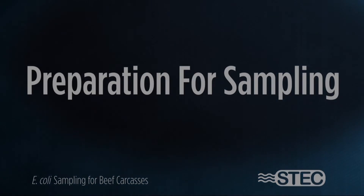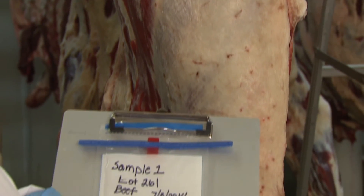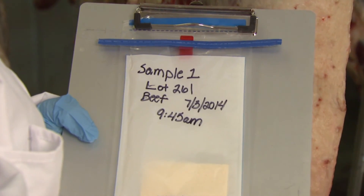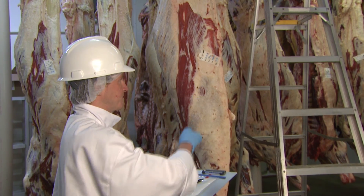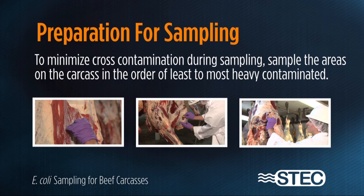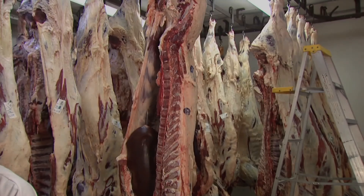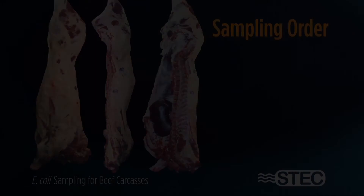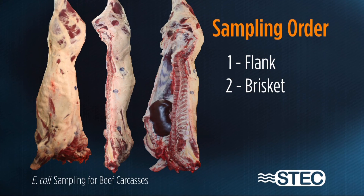To begin preparation for sampling, a sample bag should be pre-labeled with the correlating carcass number, carcass side, date, and time of sample collection before the sample is taken. This information should also be recorded on records maintained by the slaughter establishment. To minimize cross-contamination during sampling, sample the areas on the carcass in the order of least to most heavily contaminated — plan to sample the flank first, then the brisket, finishing with the rump area of the carcass.